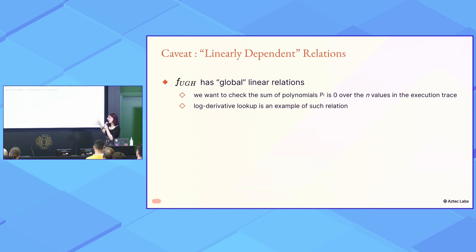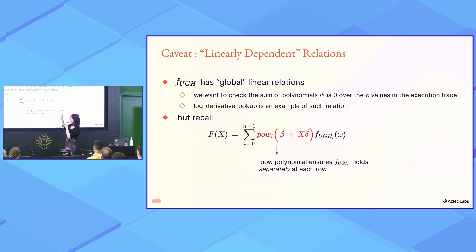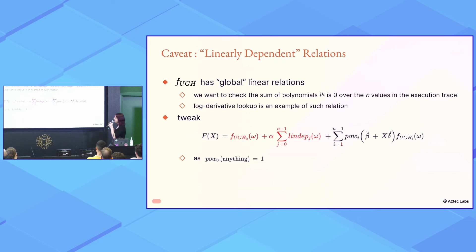And because of the way the power polynomial is structured, we can compute this polynomial in logarithmic time. In our big relation, we have something called global linear relations. So we have relations where we want to check that the sum of the polynomials, including that relation, over the entire execution trace is zero. And the log derivative lookup is an example of that. But the problem is, this power polynomial, the reason why it's here is to ensure that the relation holds at each row in the execution trace separately. So what we can do about it is tweak the polynomial in such a way that we accumulate the global linearly dependent relations separately, and add them to the constant term to not increase the length of it. And we can do that because power has a nice structure of being one at anything.